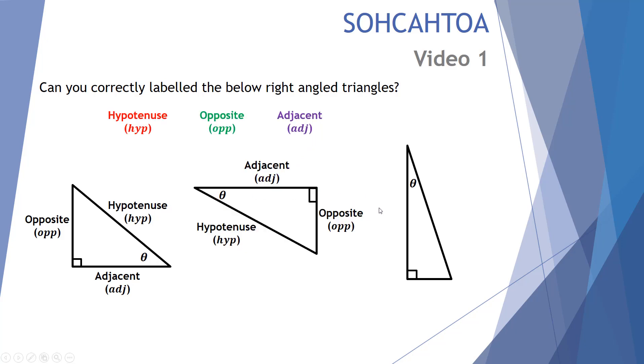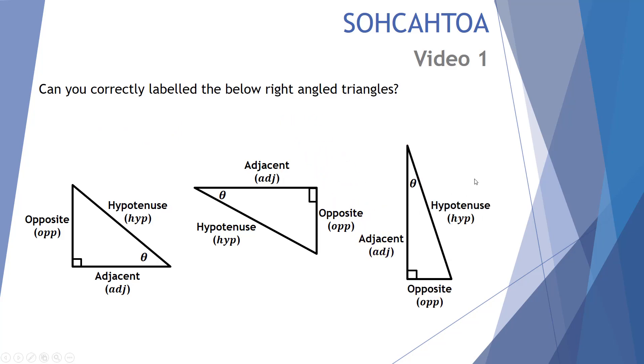Finally, again we look at our final one. Here we have two lengths that make up the angle theta, which means this one must be the opposite. The longest side length, the diagonal one, is the hypotenuse, which leaves us with our third and final being the adjacent. Well done.